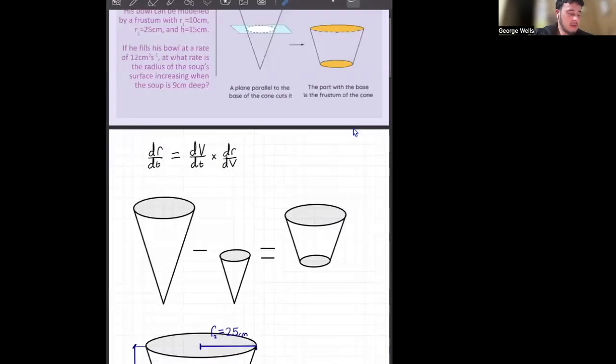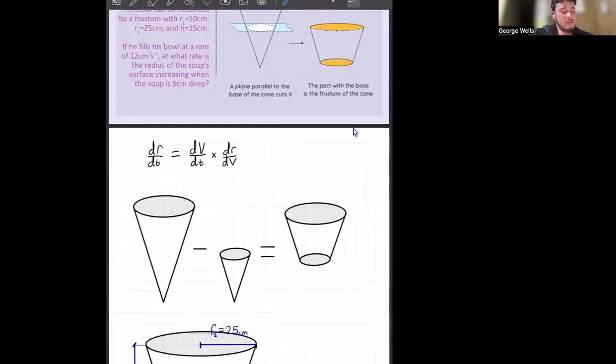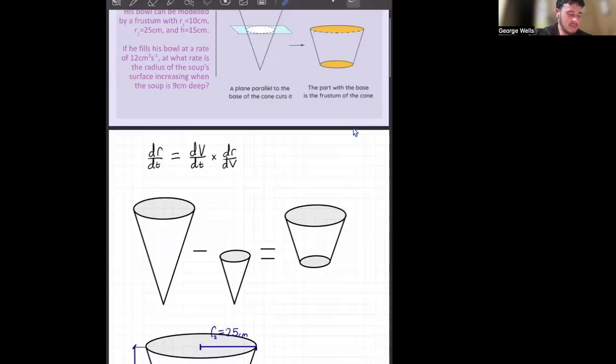Now, as I said before, our frustum is just our big cone minus our little cone. We've got our big cone here minus our little cone. That gives us our frustum. I'm a pretty visual person, so there's going to be a lot of visuals in this video. So heads up.